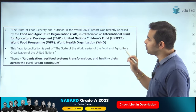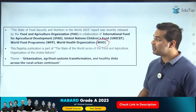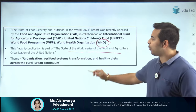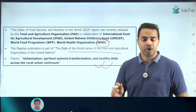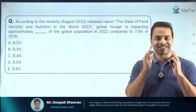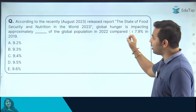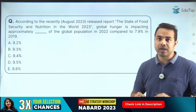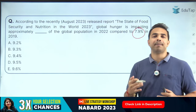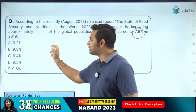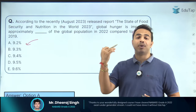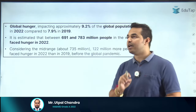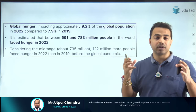WHO was also part of this publication. This is a flagship publication of the State of World Series for the Food and Agriculture Organization of the United Nations. The next question is on global hunger: approximately what percentage of the world population was impacted by hunger in 2022? The value increased from 7.9% to 9.2%, meaning 9.2% of the population is being impacted by hunger.